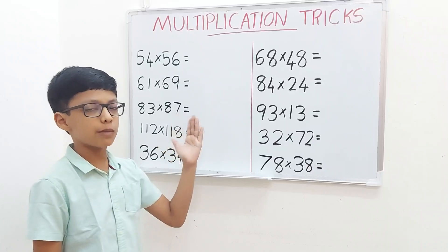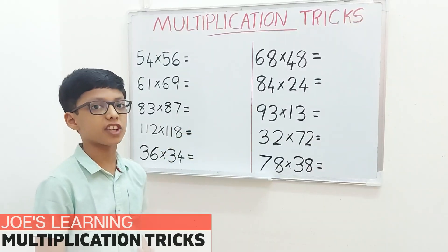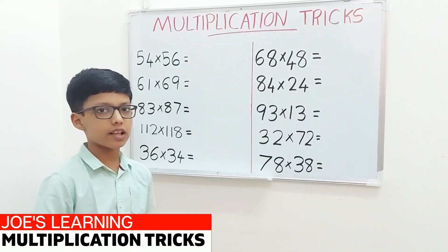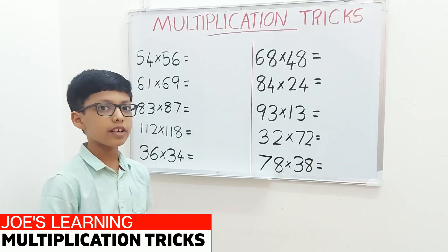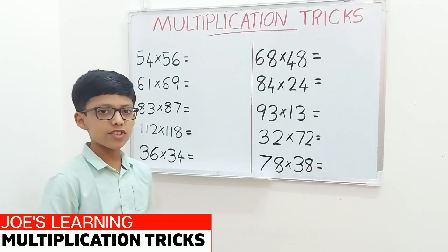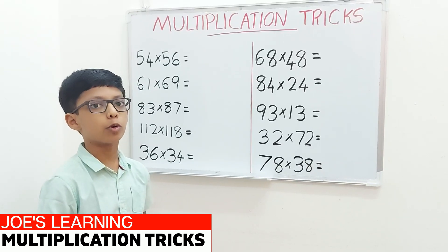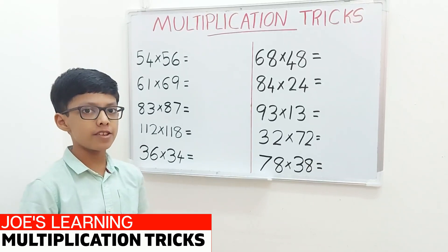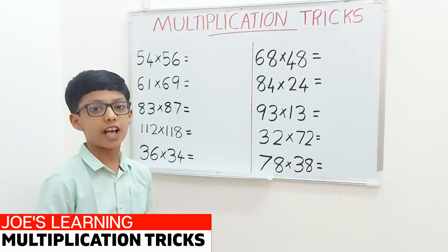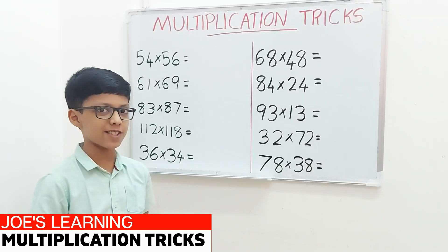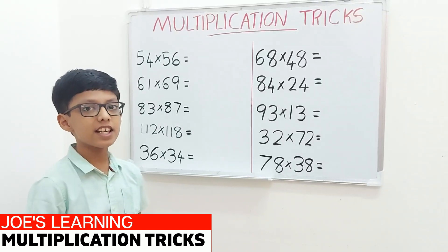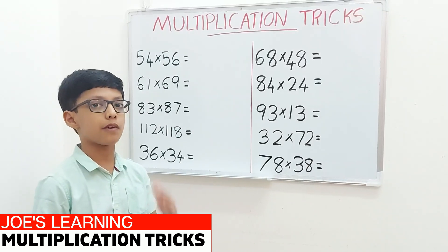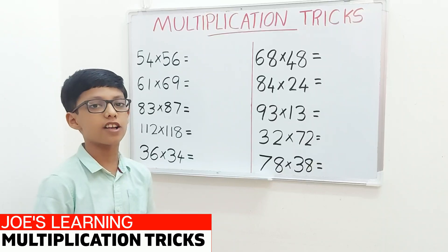These multiplication tricks can only be used for particular numbers. So the first trick which I am about to show you can only be used if the sum of the units place equals to 10 and the digits before that are the same.